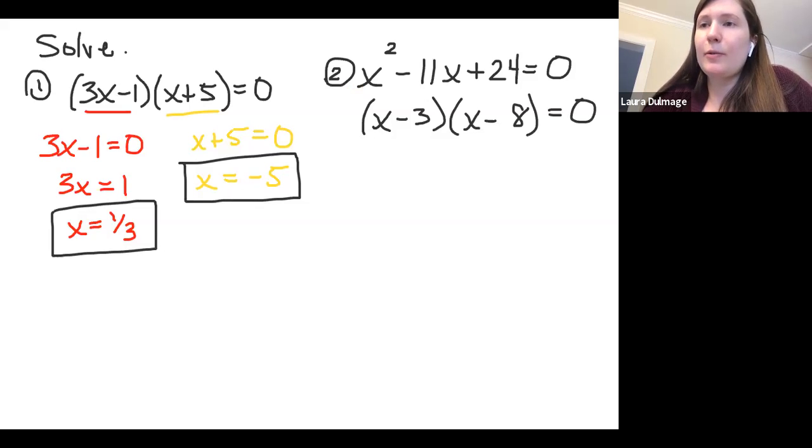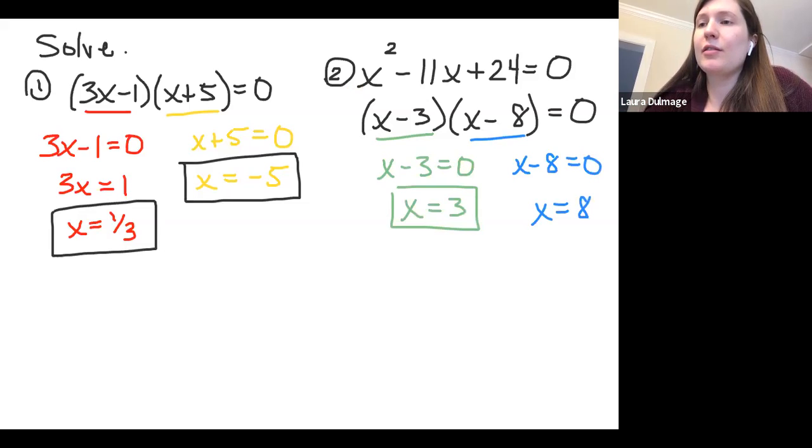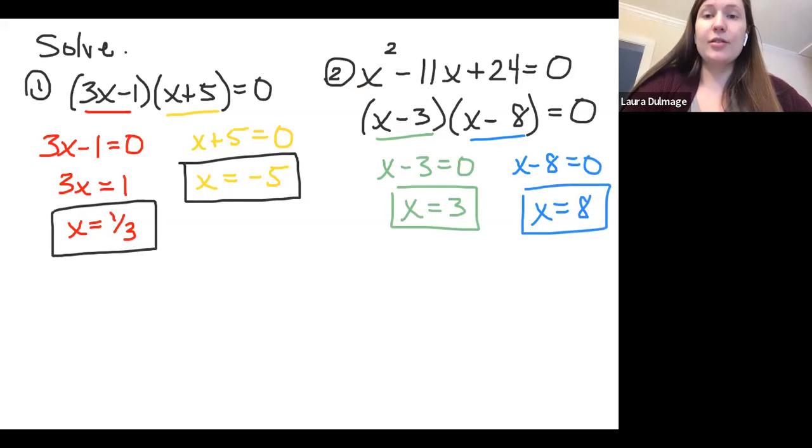So then we'll set each to zero. And then we can just do this in our heads. x - 3 = 0 gives us a solution of 3 when we add 3 to both sides. x - 8 = 0 gives us 8 as our other solution or other root or x-intercept there. So this isn't too bad. It's just one more step.